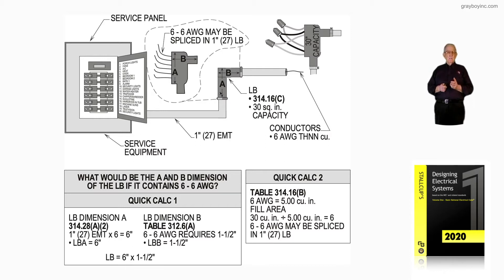Now, the LB dimension A, in accordance with 314.28A2, is one inch EMT times six equals six inches. So, the LB A would be six inches.